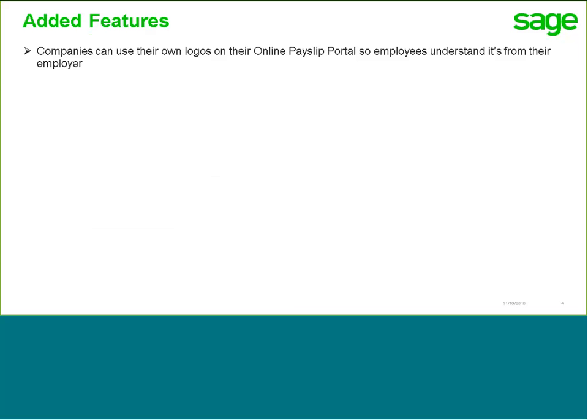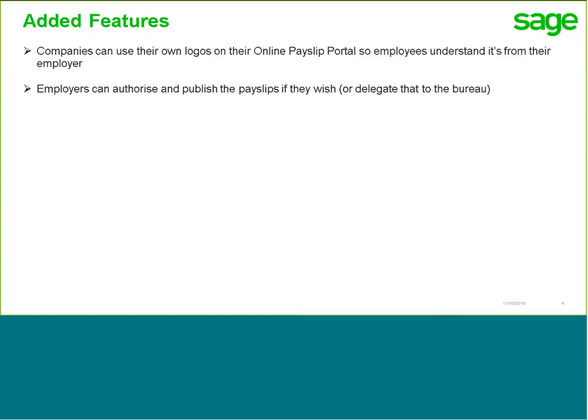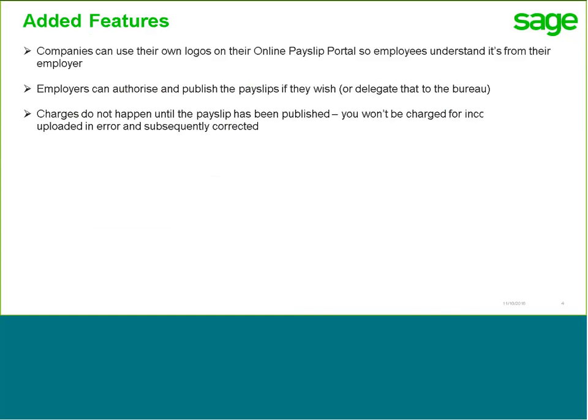Now, some of you may be aware that we've had a version called automated payslips for a few years now within SAGE. That's very well for individual companies, but we got a lot of feedback on what a bureau version should have. So, the following features have been added or improved into the online payslips module with direct feedback from accountants. Companies or bureaus can upload logos, so when the employee logs in and views the payslip, it is clearly apparent that it's from their employer. Now, one of the feedback items we received was that employers wanted to have a look at the values on payslips and check them before they were issued to employees. With the online payslips portal, this can now be built into the process. The charges won't come into play until the payslips have been published to the employees, whereas in the past, the charges were effective as soon as they were sent out from the payroll.